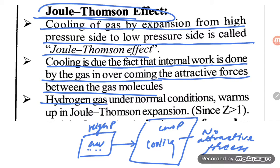Hydrogen gas under normal conditions warms up in Joule-Thompson expansion since Z value is greater than one. Joule-Thompson effect is generally cooling of gas when the gas is going from high pressure to low pressure.